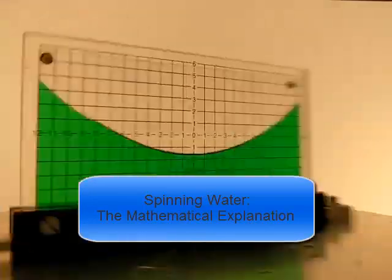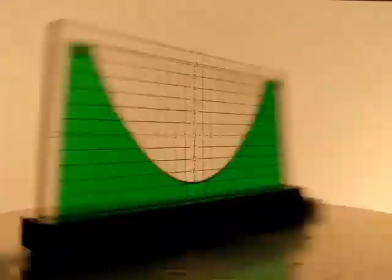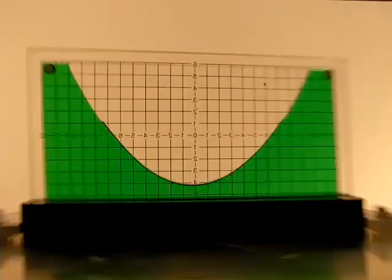This video is part three of a series. The first two showed what happens when a container of water is spun around a vertical axis through its center, and gave a conceptual explanation for why the surface of the water takes on a parabolic shape, with a minimum of math. This video will show a mathematical proof that that is the case.